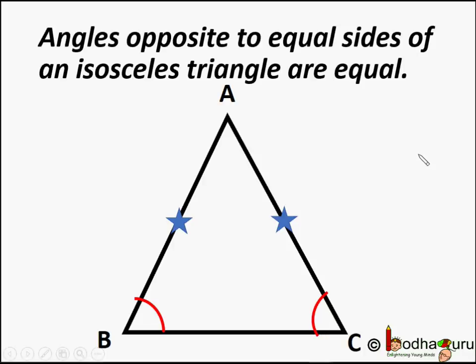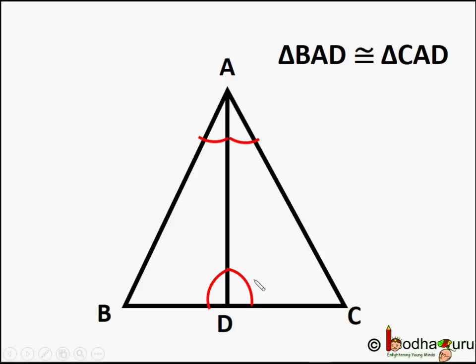Now there is another interesting property which we should pay attention to. Look, BD is equal to DC means D is the midpoint of BC. And angle ADB is equal to angle ADC. And the sum is 180 degrees. Both are right angles.